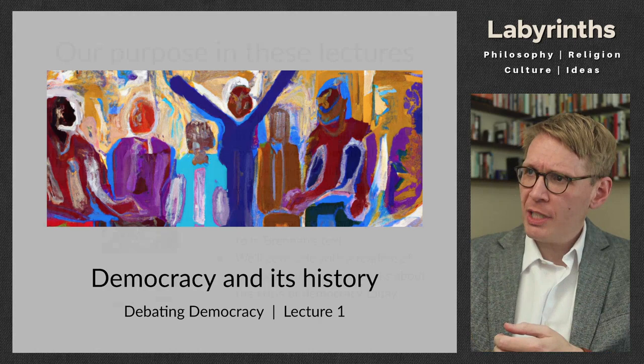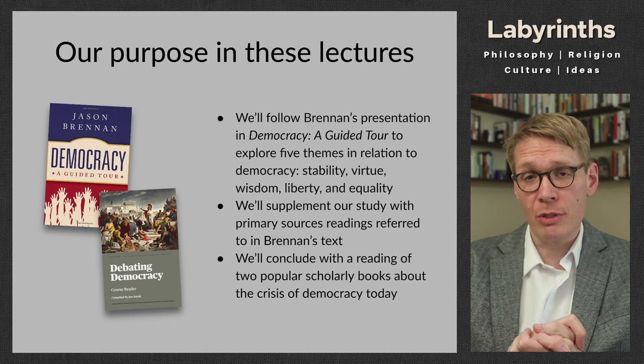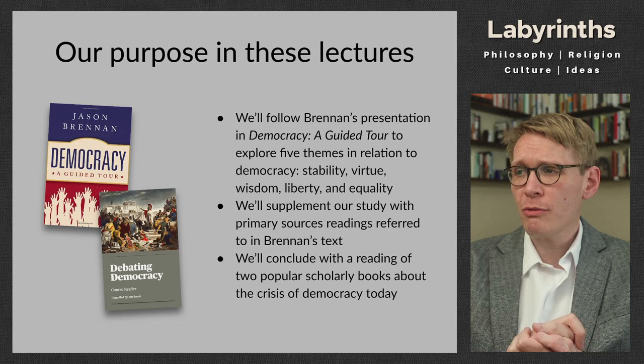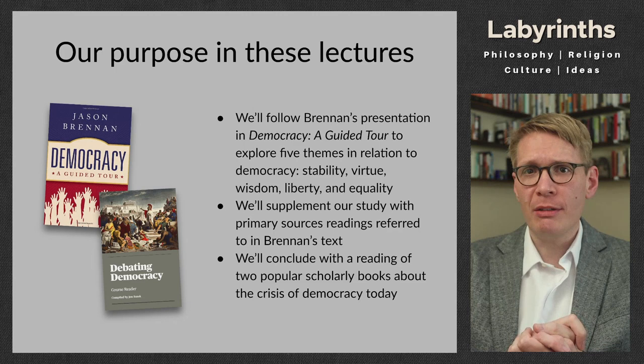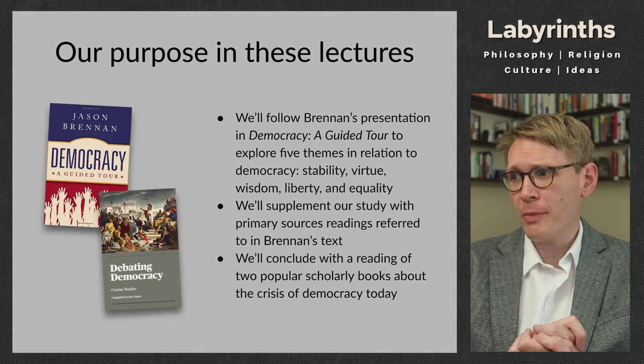We're going to be following Brennan's presentation in the book, and the five themes he uses to structure his study are: stability, virtue, wisdom, liberty, and equality. What makes the book so neat is that a pair of chapters is devoted to each of those five themes, constituting the bulk of the text. We're going to be supplementing our study with some primary source readings — things I've assembled informed by Brennan's text as well as by my own work in this area.